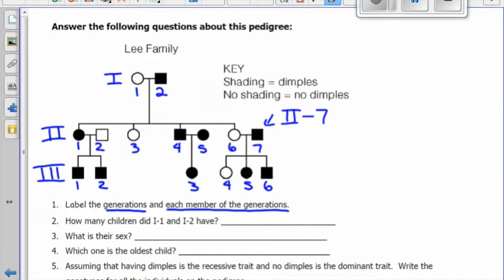How many children did 1-2 and 1-1 have? We count the numbers coming down from their line directly attached to them. So we have 1, 2, 3, 4 children.